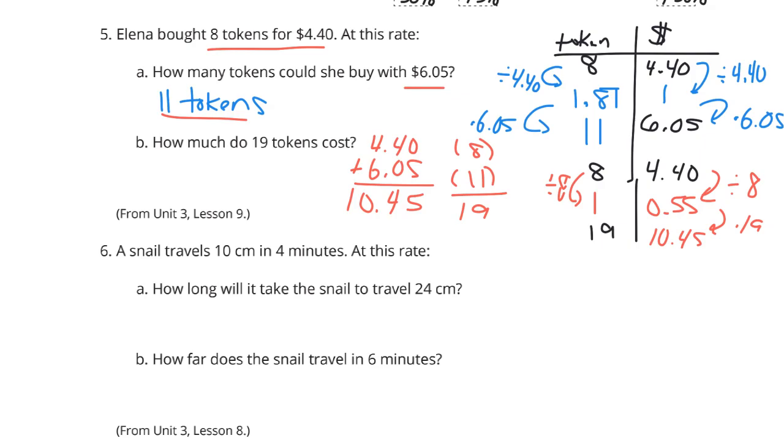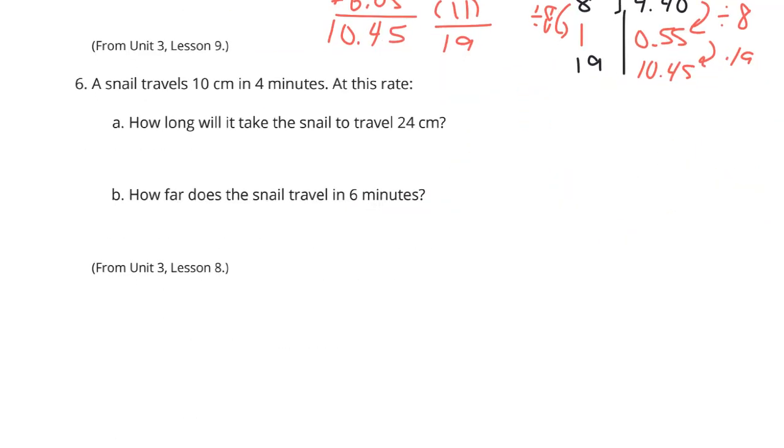All right. One more review question. A snail travels 10 centimeters in four minutes. At this rate, how long will it take the snail to travel 24 centimeters? And then how far does the snail travel in six minutes? Let's make a table again. We have centimeters and we have minutes. We're told 10 centimeters in four minutes. We're trying to get to 24 centimeters. Well, once again, if I can break this down to one centimeter, I'll do that by dividing by 10.